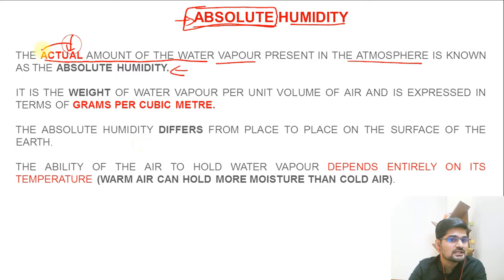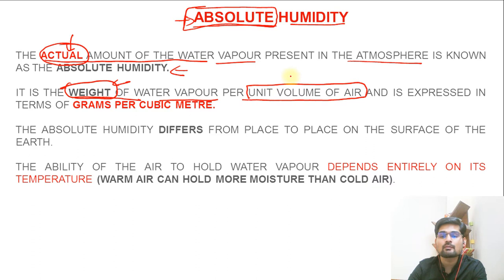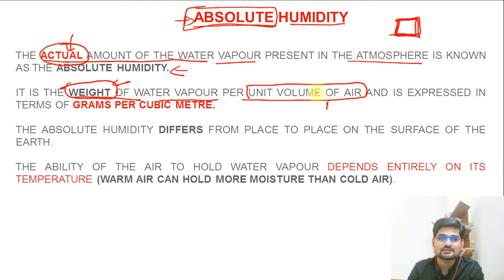Absolute humidity is the weight of water vapor per unit volume of air. In one unit volume - remember the concept of air parcel - in one parcel of air, how much is its weight? That is important and it is expressed in grams per cubic meter. Cubic meter is important and grams is important in terms of units.